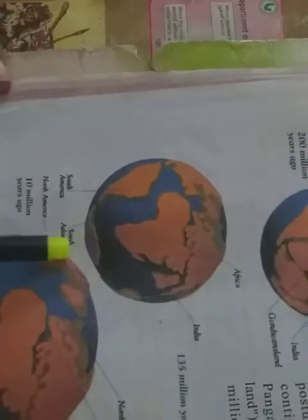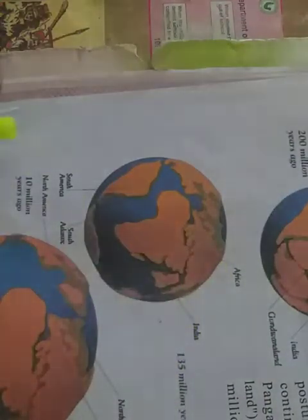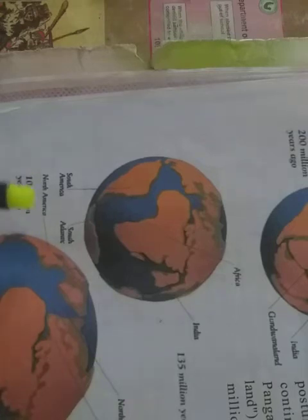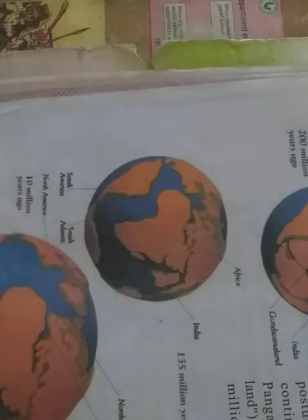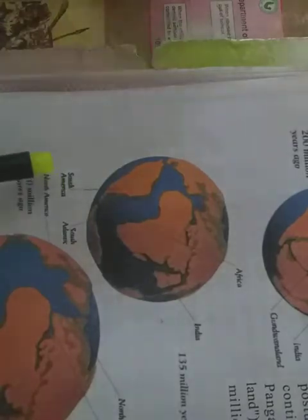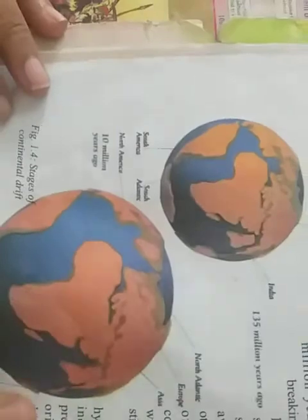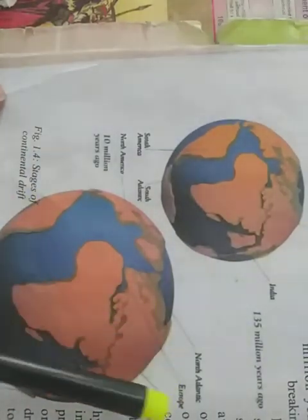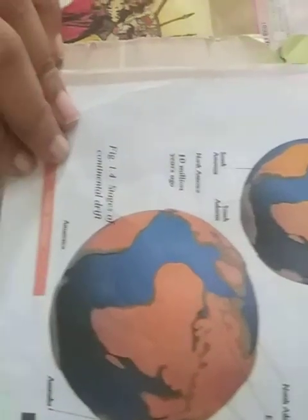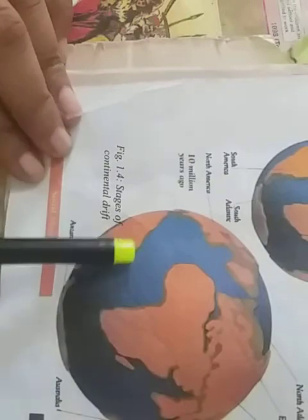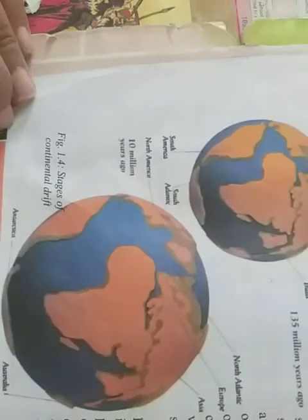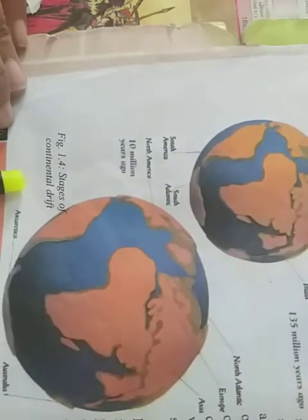Gondwana land and Laurasia are separated by Tethys sea. See here, this is the red line. This is the Tethys sea. It separated Gondwana land and Laurasia. You can see here Africa, India, South America and South Atlantic. Where is it? It is in Gondwana land.